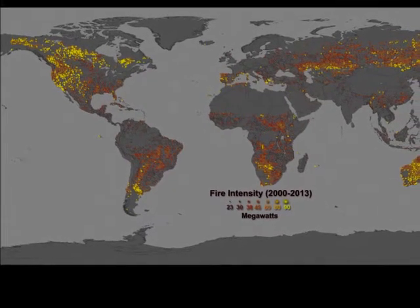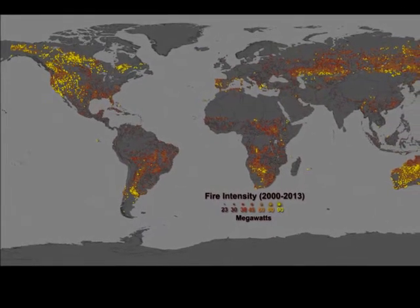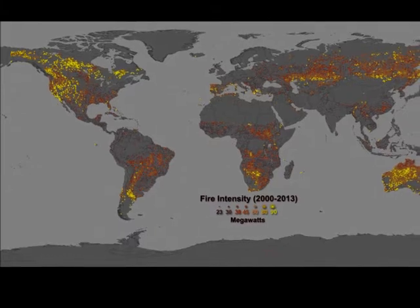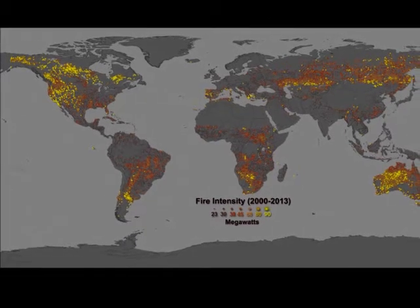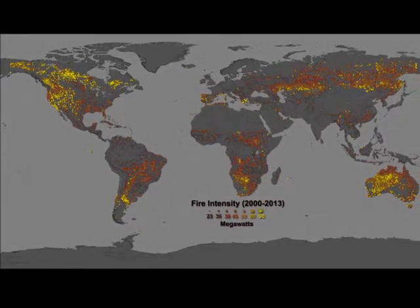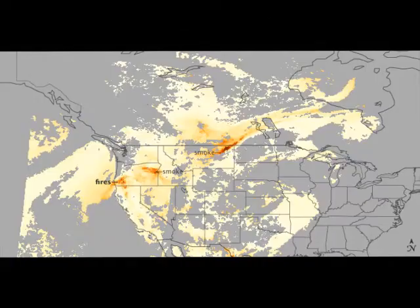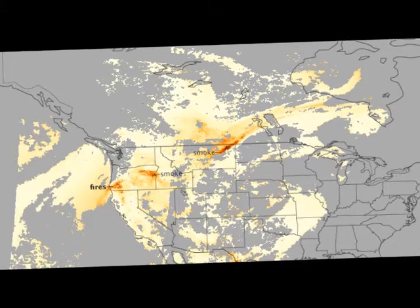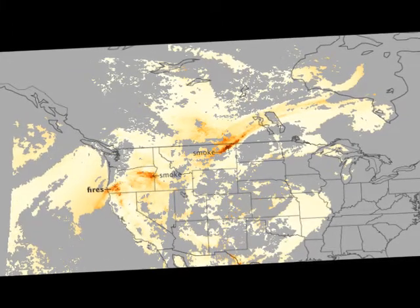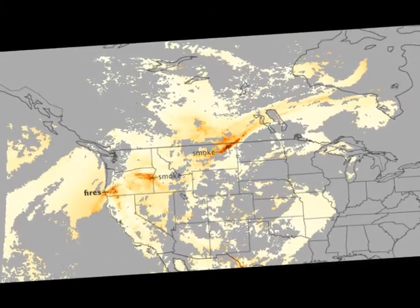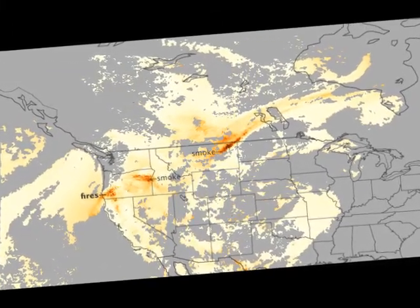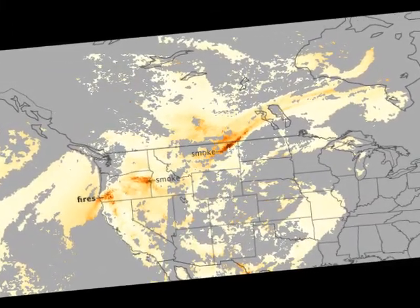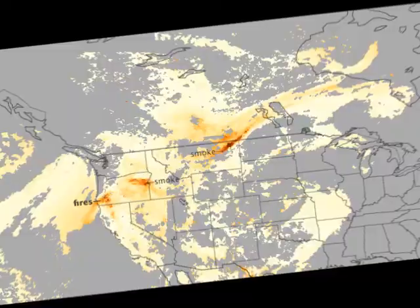NASA is using the Moderate Resolution Imaging Spectroradiometer, also known as MODIS, to document the occurrences and intensity of wildfires across the globe. Its images help scientists identify areas of high risk and prevent future natural disasters.